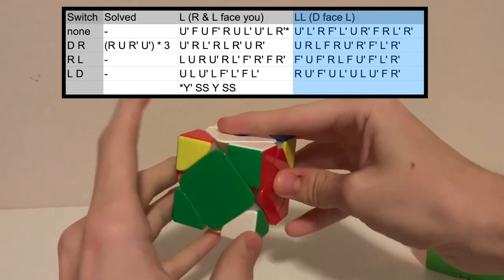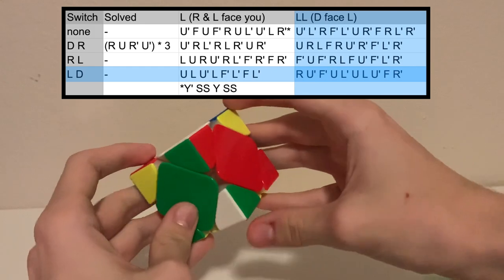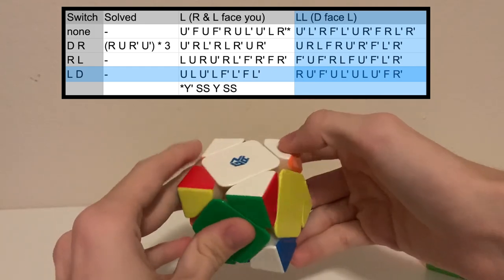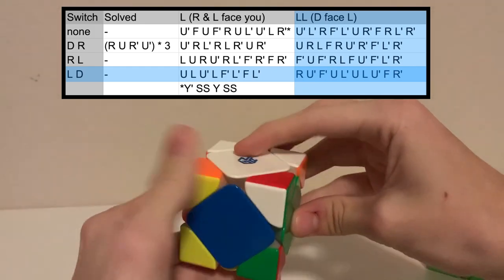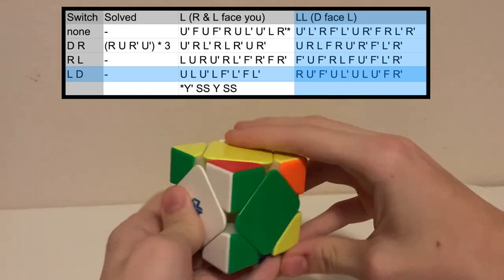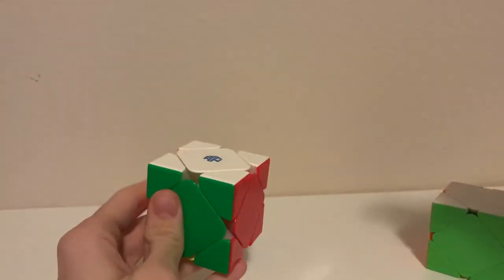So that means that L and D are swapped. So then we can just do the algorithm from the spreadsheet. I'll have it in the description. And it's solved.